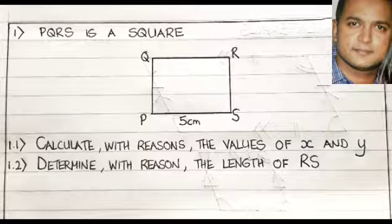PQRS is a square. Calculate with reasons the values of x and y. Determine with reasons the length of RS.